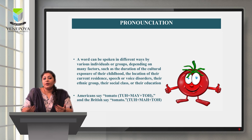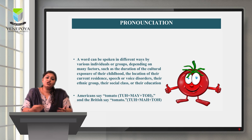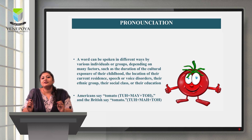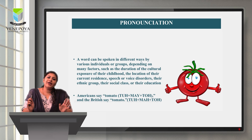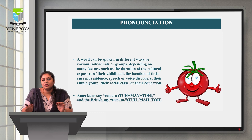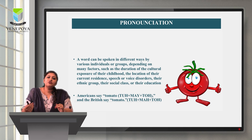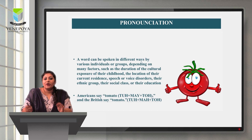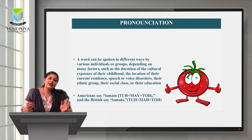Words can be spoken differently by various individuals depending on many factors: how they were brought up, duration of cultural exposure in childhood, the country they live in, their current residence, social class, ethnic group, and friend circle. For example, in America this fruit is pronounced 'tomAYto,' whereas in British English it is 'toMAHto.' Many people here use the American pronunciation due to exposure to American movies.